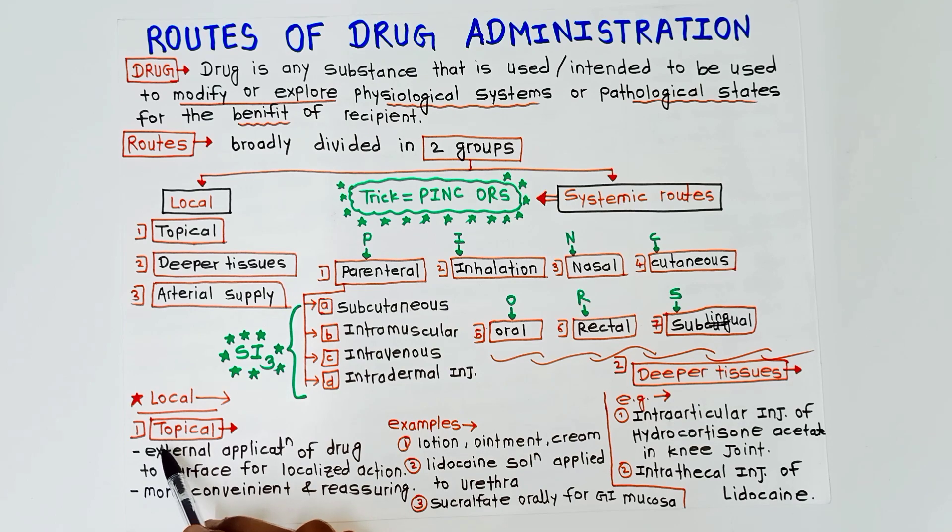Now we will learn one by one in detail. First, local routes. In that, topical is the first one. What is topical route? There is external application of drug to the surface for localized action. It is more convenient and reassuring to the patient. Examples of topical route are lotion, ointment, cream, powder, lidocaine solution applied to the urethra.